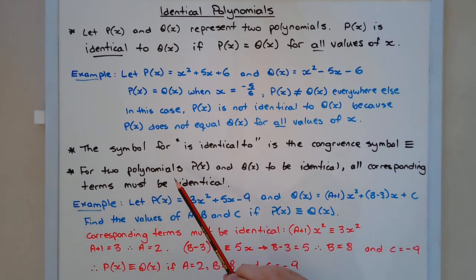For two polynomials P of X and Q of X to be identical, all corresponding terms must be identical.